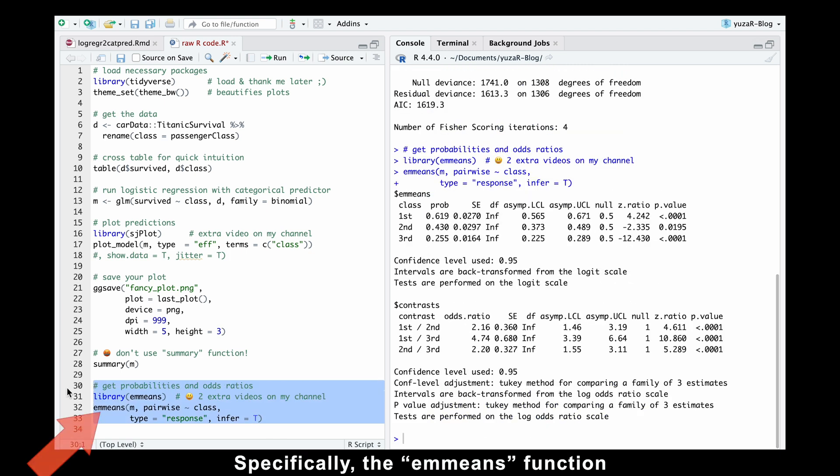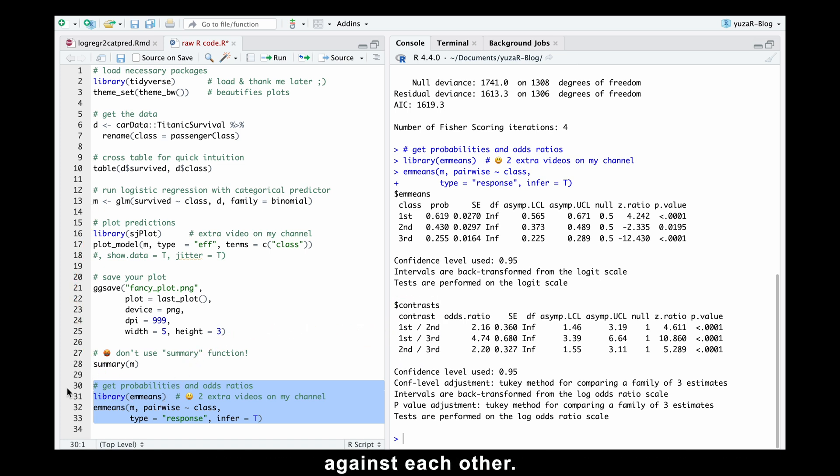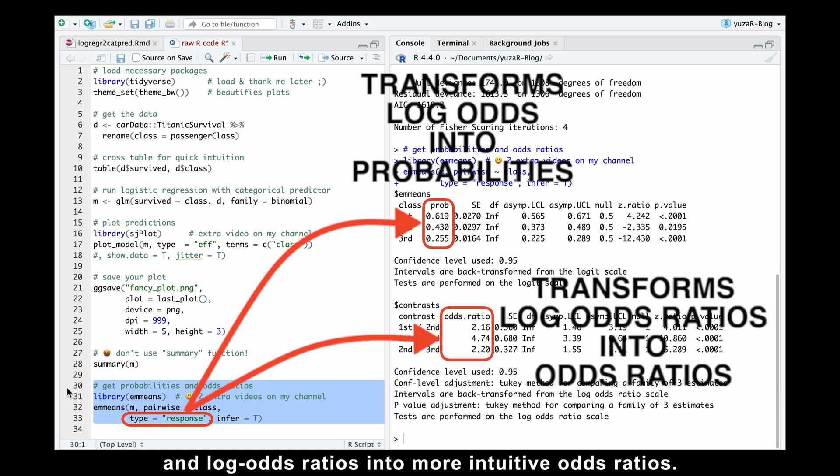Specifically, the emmeans function from the emmeans package provides all we need. It consists of five clear parts: our model object, the pairwise argument which compares all passenger classes against each other, the name of our predictor, the type equals response argument which transforms log odds into probabilities, and log odds ratios into more intuitive odds ratios.